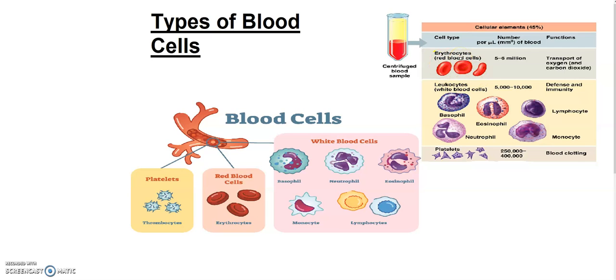Now let's discuss about WBC. In the last video I told you about WBC. They are also called leukocytes. WBC are classified into 5 classes — they have 5 types.